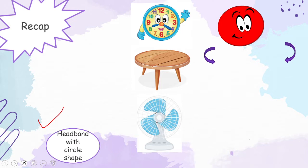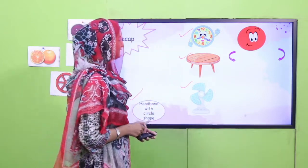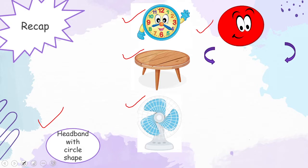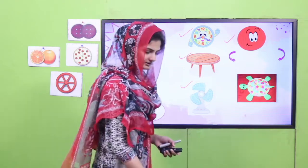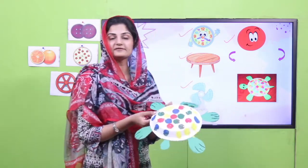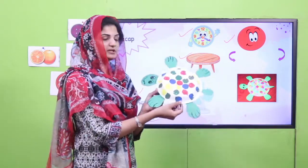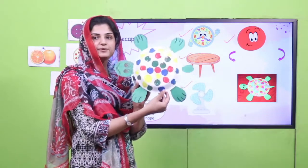After that, we looked at the pictures in the book and we traced the outline of them. Then we sang the poem of circle, and we made a beautiful tortoise craft.